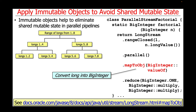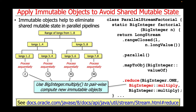The next step is to call the mapToObj intermediate operation to convert the long primitive values into BigIntegers, which are arbitrary precision integer values. The next phase of the parallel stream applies the reduce terminal operation. First, we use the BigInteger multiply method to pairwise compute new immutable BigInteger objects. For example, values 1 and 2 are multiplied to create 2, values 3 and 4 are multiplied to create 12, values 5 and 6 to create 30, and values 7 and 8 to create 56. Each of those multiplications occurs sequentially within a chunk, but all chunks run in parallel.